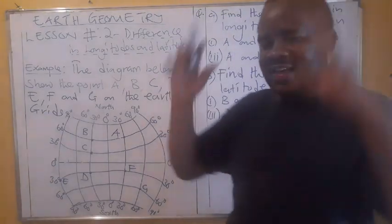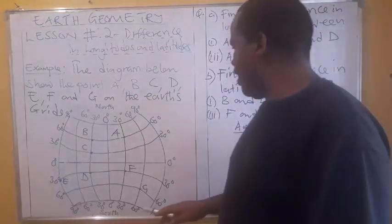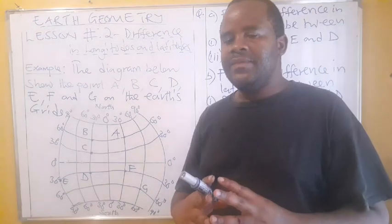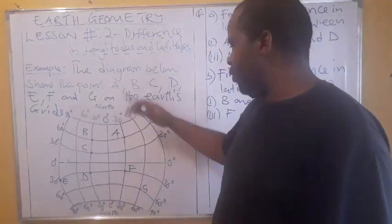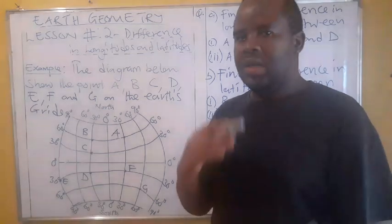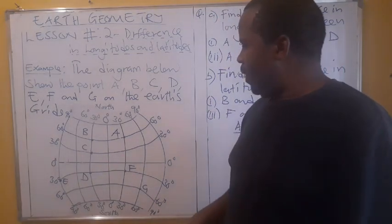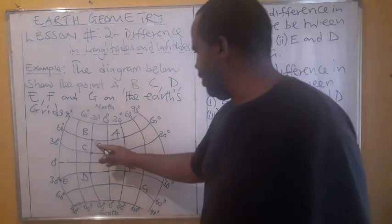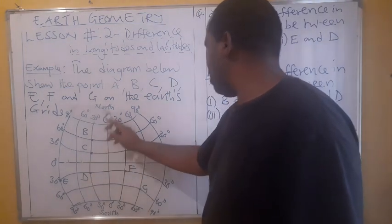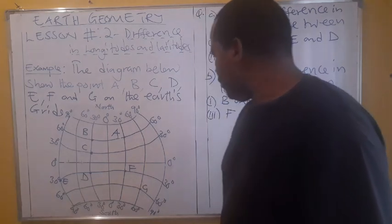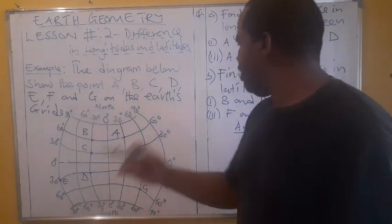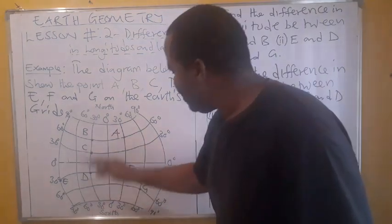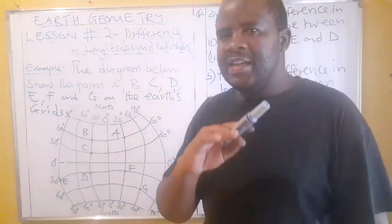If you're dealing with the difference in latitude, what we use is the equator. If the two points are on the same side of the equator, you get the difference by subtracting. If they are on different sides — for example, point B is on the northern hemisphere and D is on the southern hemisphere — you get the difference in latitude by adding.